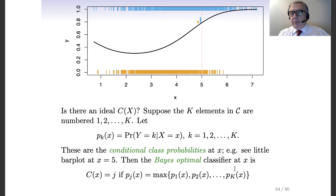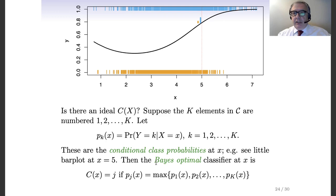The question of course is to know these conditional class probabilities. This is somehow similar to the issue of knowing the joint probability of x and y that we saw in the regression problem. If we knew that joint probability, it was possible to compute the conditional expectation, and the regression problem was solved because we could compute the regression function — the optimal solution. Here, the analogous key quantities are the conditional class probabilities.